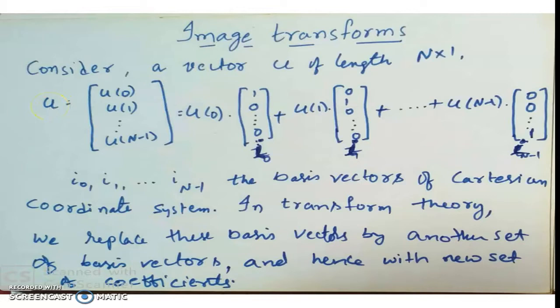These vectors are called basis vectors, used to represent vector u. This is the same old concept where we represent a vector with i-cap, j-cap, k-cap. For example, 2i-cap + 3j-cap + 4k-cap is 2·[1,0,0] + 3·[0,1,0] + 4·[0,0,1] — the same thing in a higher dimensional space. So i0, i1, ..., i(N-1) are the basis vectors of the Cartesian coordinate system. Transform theory is trying to replace these basis vectors with another set of basis vectors.